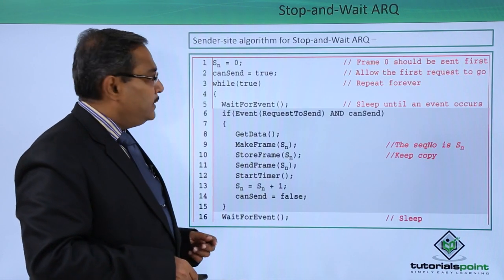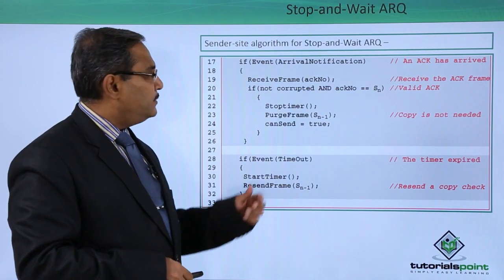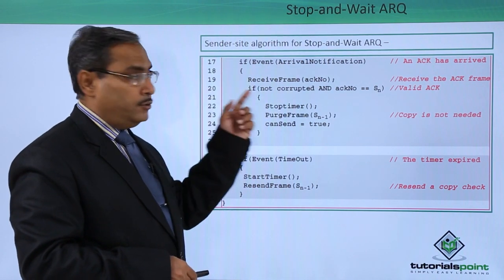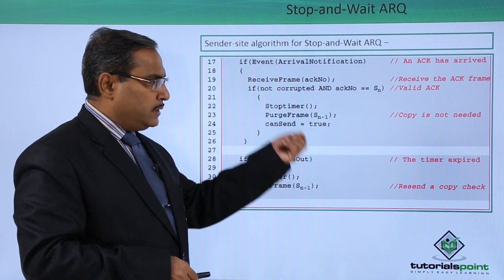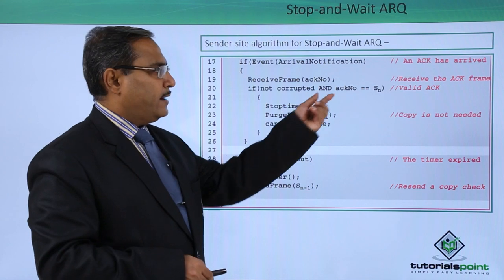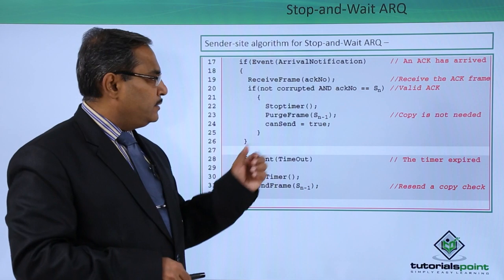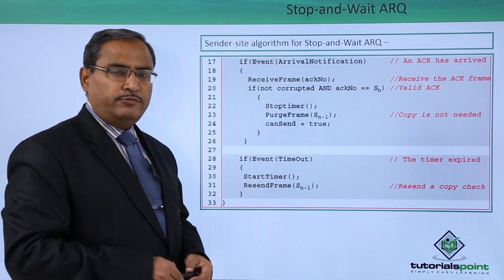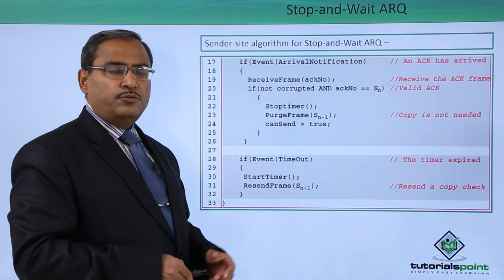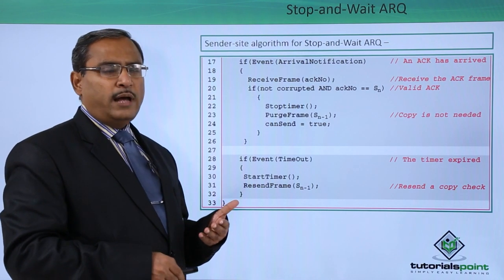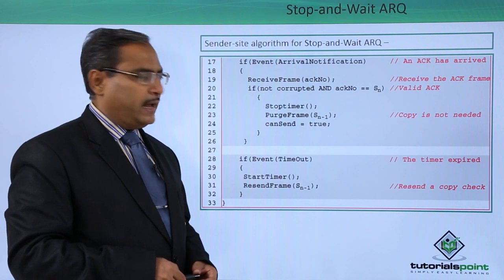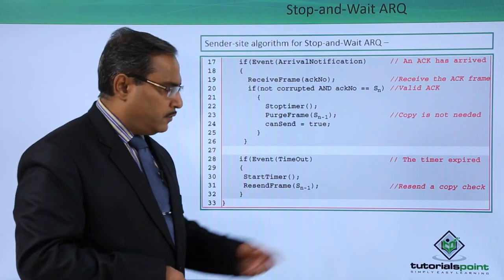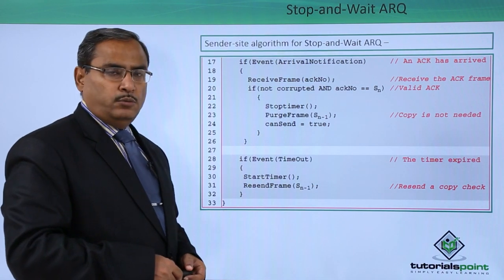Continuing from line 16 to line 17: if the event is 'arrival notification' and an acknowledgement has arrived — this is the sender-side algorithm — receive the acknowledgement frame. If it is not corrupted and the acknowledgement number equals sn, it is a valid acknowledgement: stop the timer, purge frame sn-1 (the copy is no longer needed, so delete it from the buffer), and set can_send = true because the frame was successfully received. If event is timeout: restart the timer and resend frame sn-1.